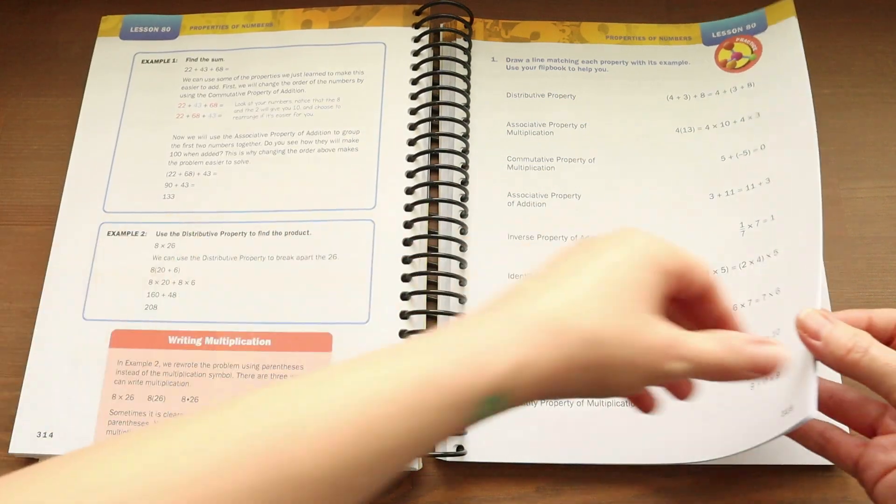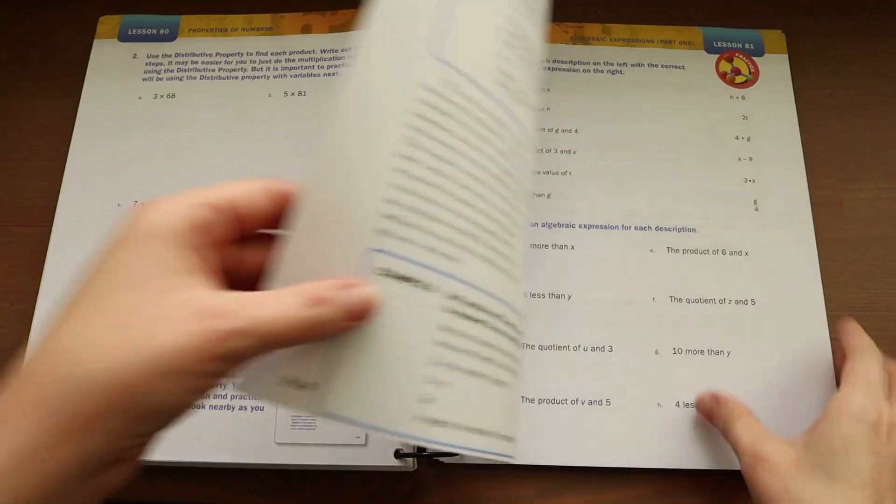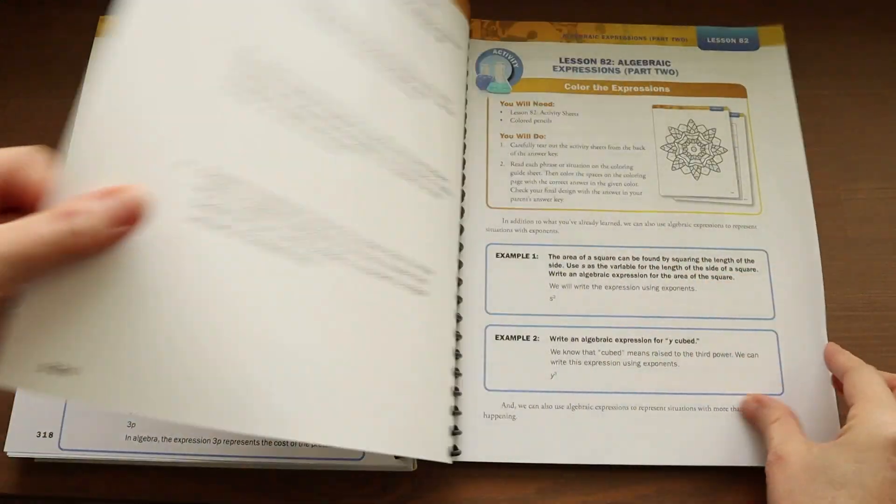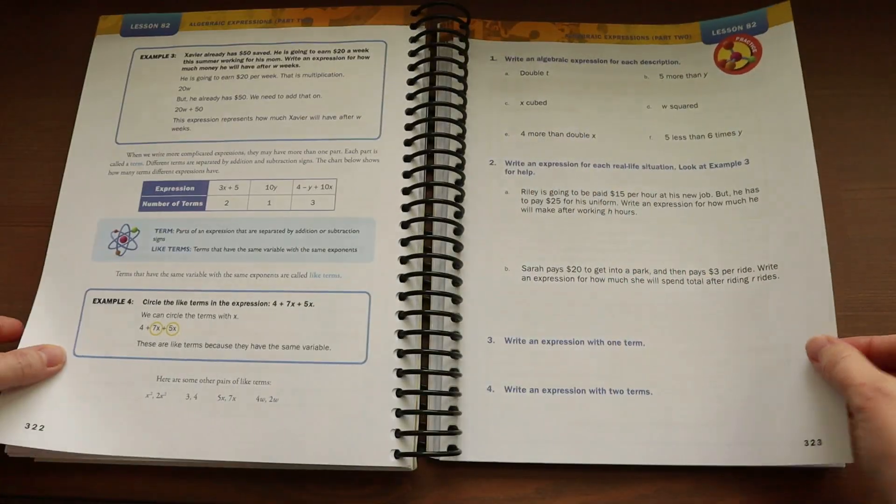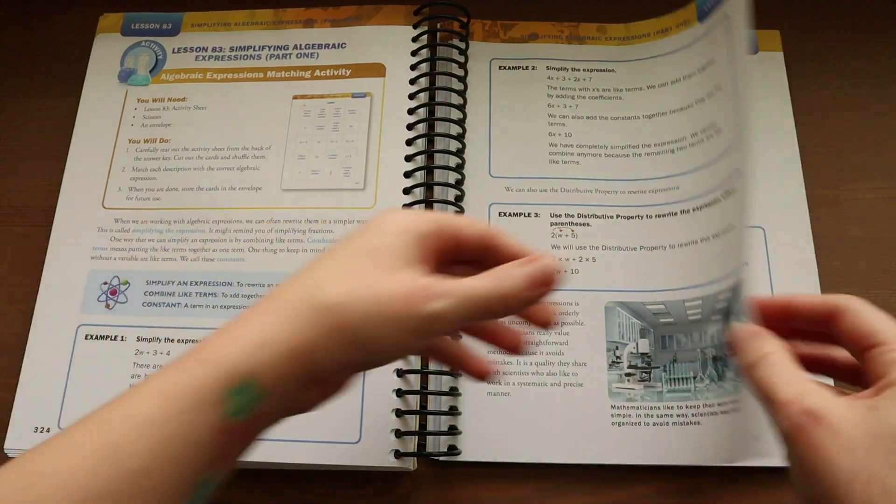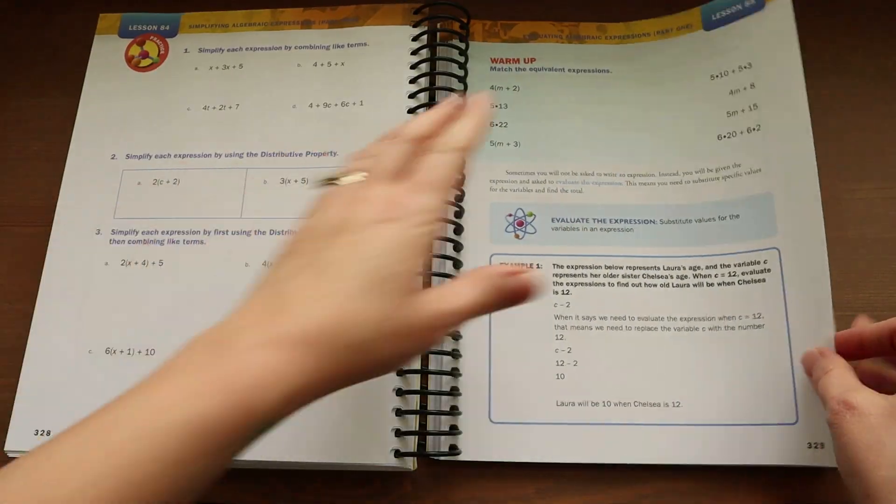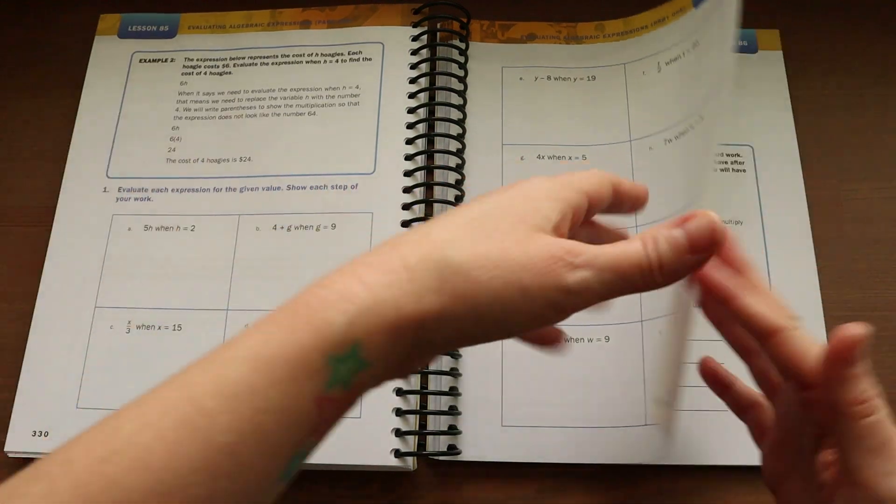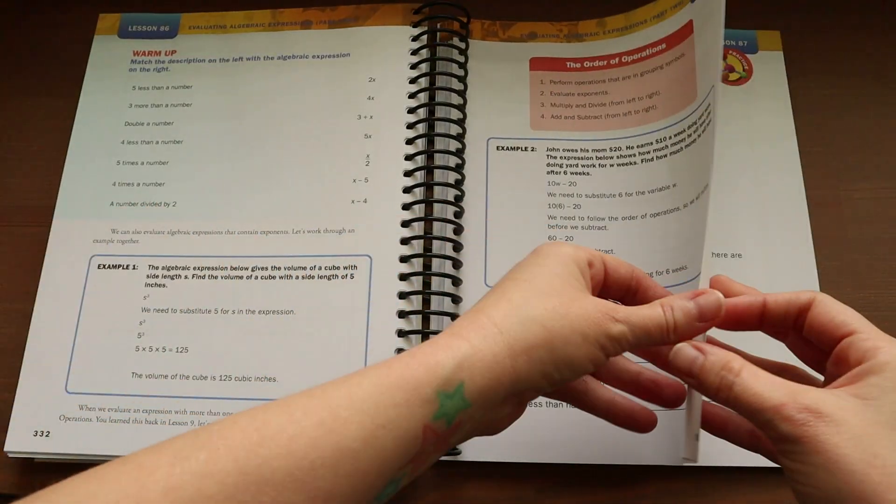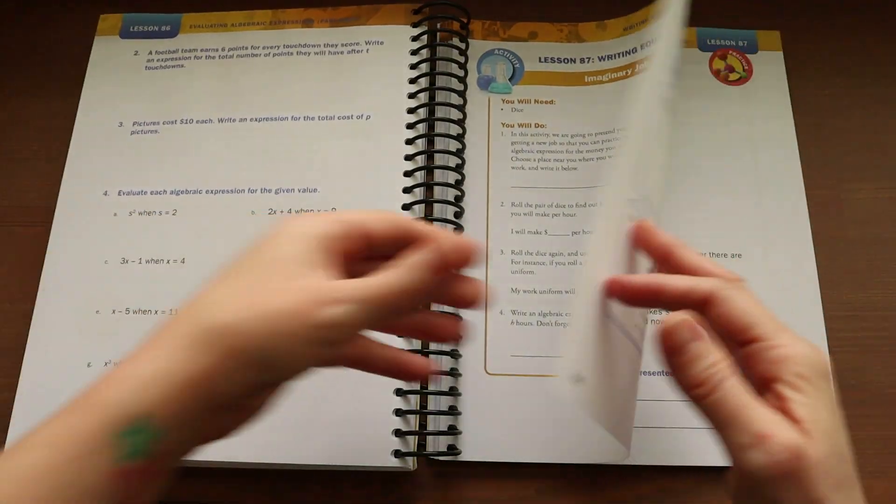And so I really like that the examples look just like the problems that your child is expected to solve by themselves. Now I'm going to finish flipping through the book for you all just so you can get a good idea of what all of the lessons look like and then I will go ahead and walk you through a few lessons as well as giving you a glimpse inside the teacher's guide.